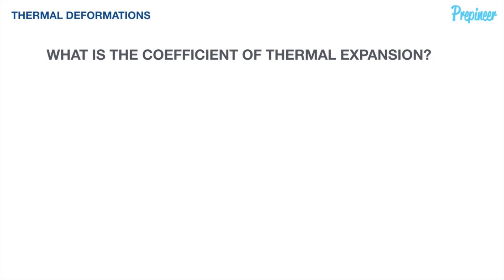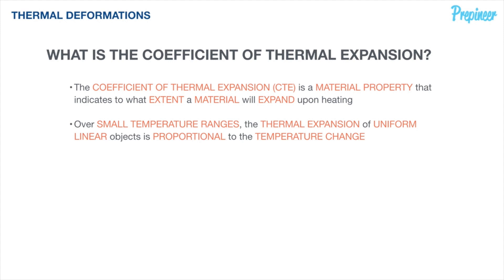So what is the coefficient of thermal expansion? The coefficient of thermal expansion is a material property that indicates to what extent a material will expand upon heating. Different materials and substances expand by different amounts. Over small temperature ranges, the thermal expansion of a uniform linear object is proportional to the temperature change. On the FE exam and in the problems that we will be working on, we can hold this assumption. Because it's a uniform linear object, it's going to be directly proportional to that temperature change.